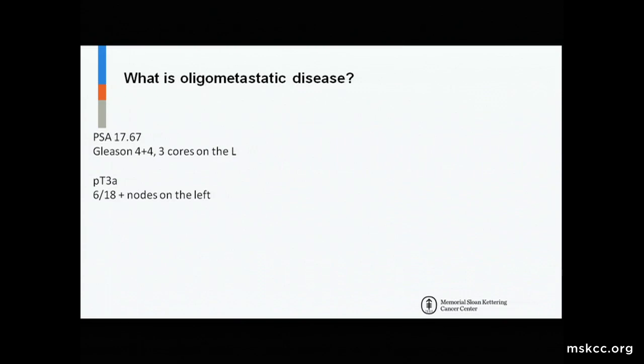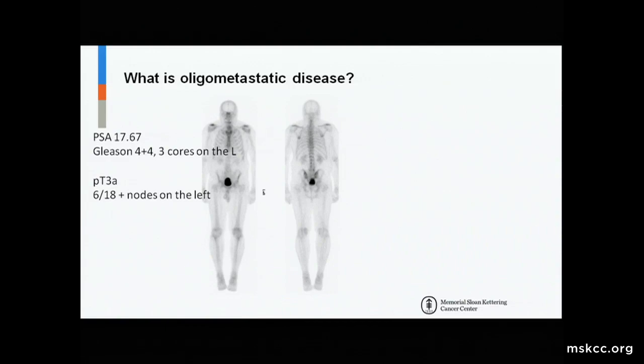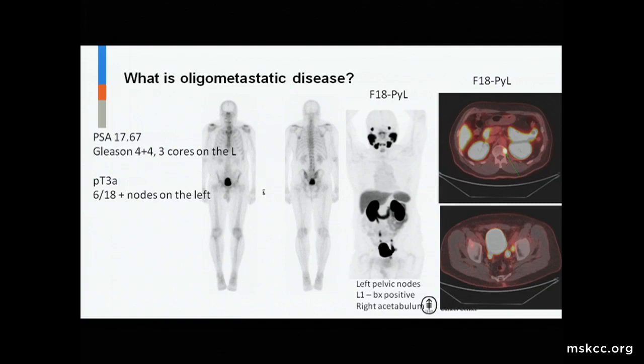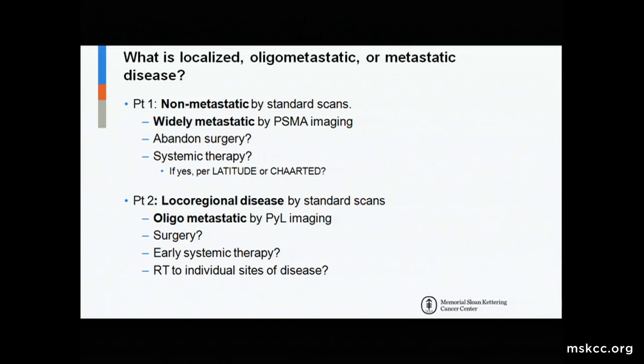By the same token, let's look at this patient that James and I shared — PSA of 17 pretreatment, Gleason 4 plus 4 tumor, 3 cores positive on the left at surgery as T3A disease, 6 nodes on the left. Bone scan is entirely clear, so one might presume this patient is free of disease. But on his pretreatment PYL scan, you can see this small dot at L1 where the arrow is. He also has a positive finding in the right acetabulum. We biopsied the L1 lesion — it is positive. So he too, by standard imaging, would have non-metastatic or at least local regional disease.